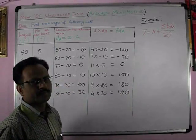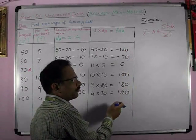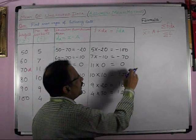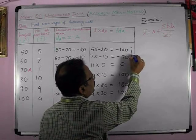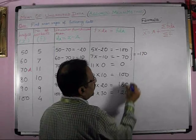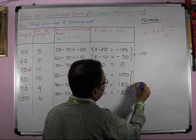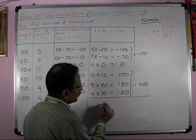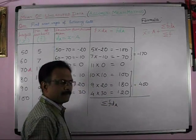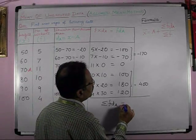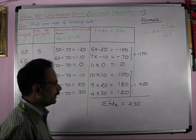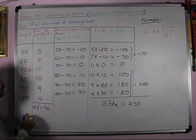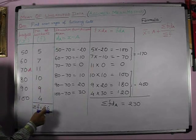Now, what we have to do? We have to add these all terms. There are few terms that are negative, and few terms are positive. And one of the terms is 0. So, we will add negative terms, which is minus 170. And the positive terms, which is 400. Summation of F DA is equal to 230. And summation of F is equal to 46. 5 plus 7 plus 11 plus 10 plus 9 plus 4 is equal to 46.